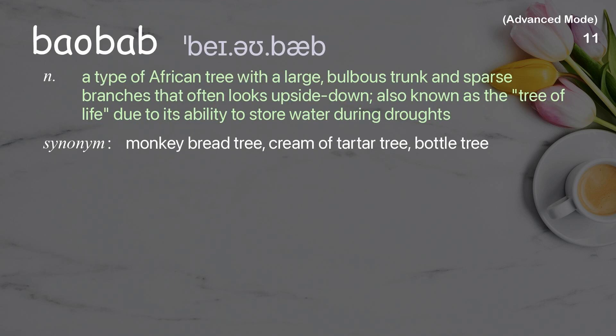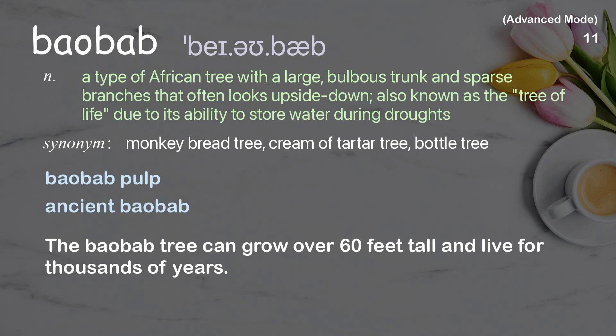Baobab: A type of African tree with a large, bulbous trunk and sparse branches that often looks upside down, also known as the tree of life due to its ability to store water during droughts. Examples: Baobab pulp. Ancient baobab. The baobab tree can grow over 60 feet tall and live for thousands of years.